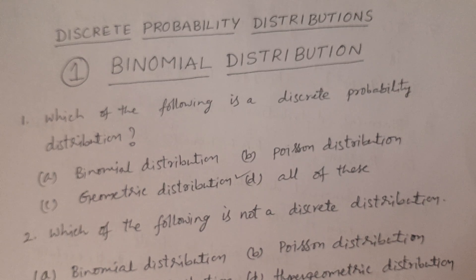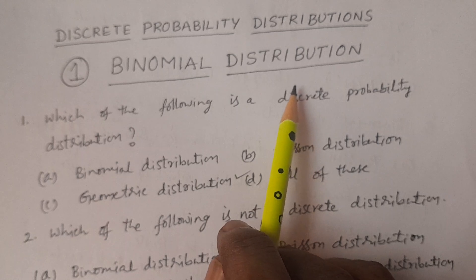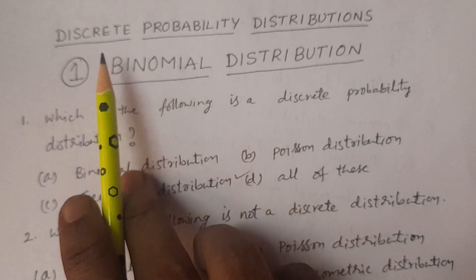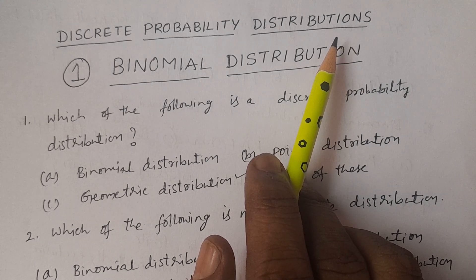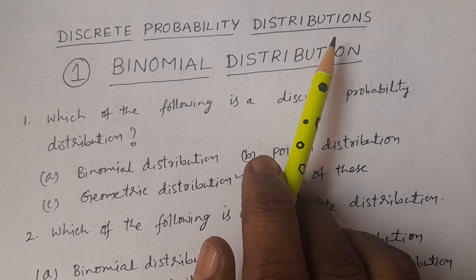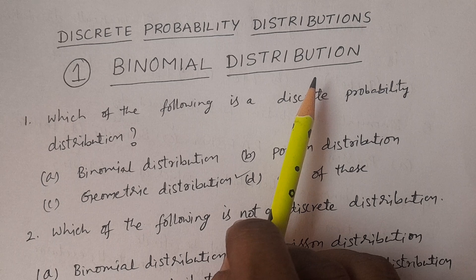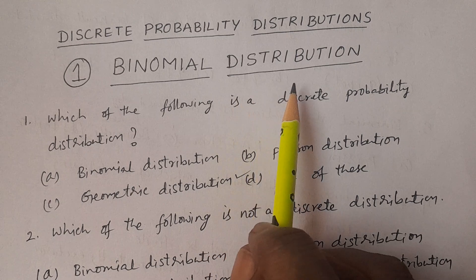Welcome to BSc Statistics students. In this class, I will discuss multiple choice questions on the topic of binomial distribution. Here are some distributions called discrete probability distributions. In discrete probability distributions, there are five distributions we will discuss one by one: one, binomial distribution; two, Poisson distribution; three, negative binomial; four, geometric; five, hypergeometric. Now, binomial distribution part one.